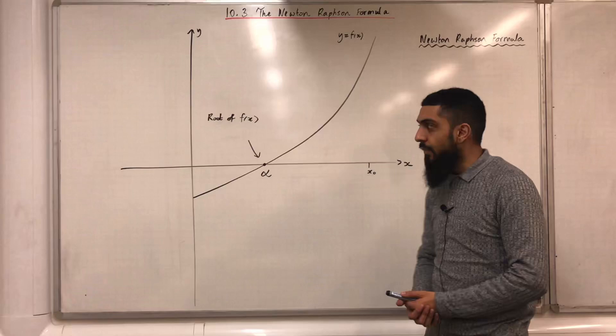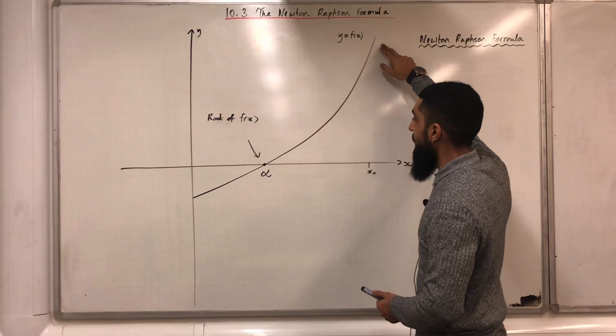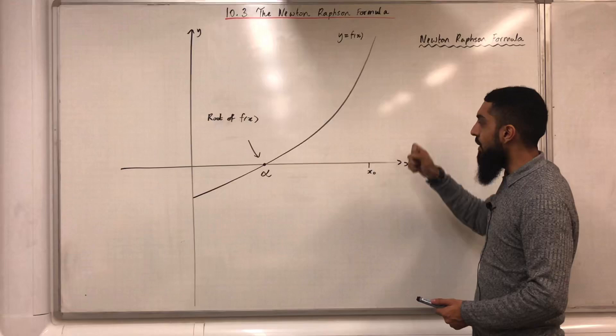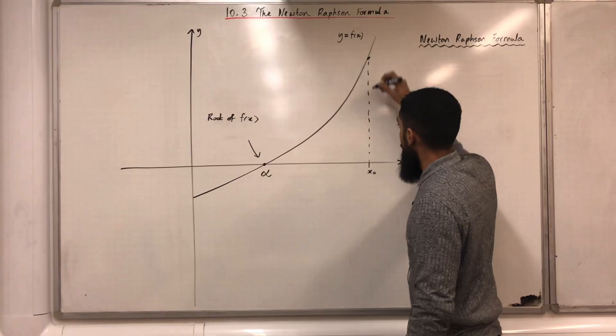Consider the following coordinate grid and the following graph y equals f(x). Alpha is the root of f(x). Suppose x0 is the first approximation to alpha. I'm going to draw a tangent to the curve y equals f(x) at the point x0.